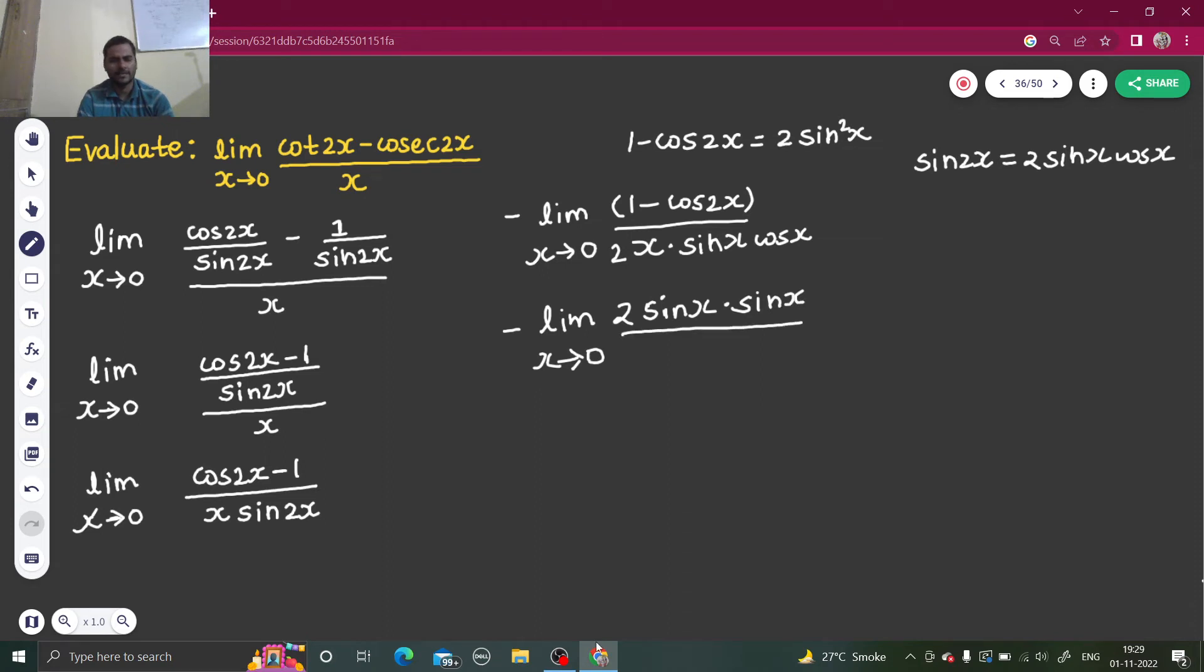And in denominator I have 2x, then I have a sine x, and a cos x. My pen is lagging again, so this is making the question a bit slow. So this 2 can be cancelled, the sine x can be cancelled. Sine by cos I can write as tan in numerator. So minus limit x tending to 0, sine by cos is tan.